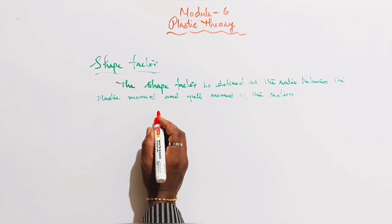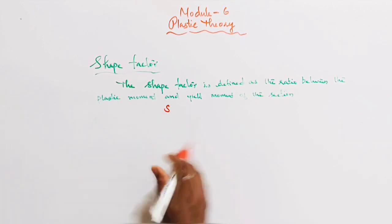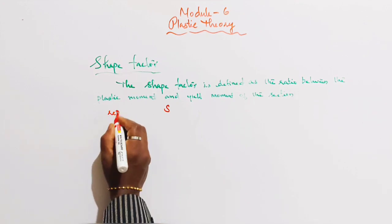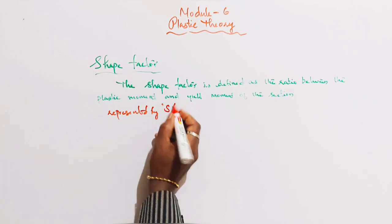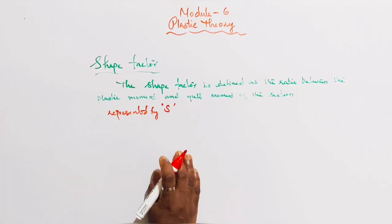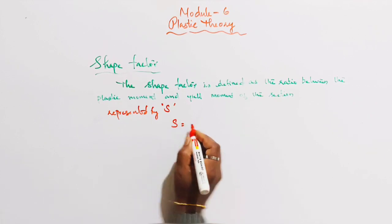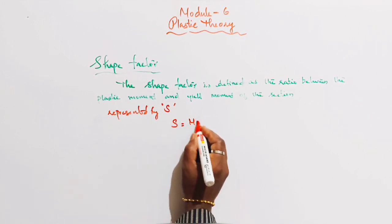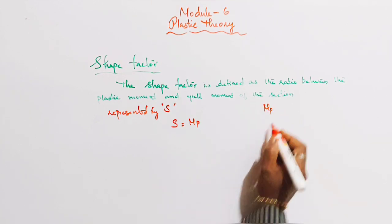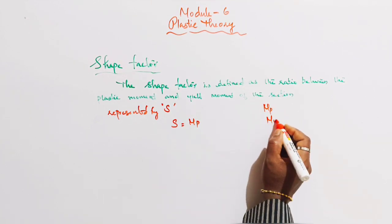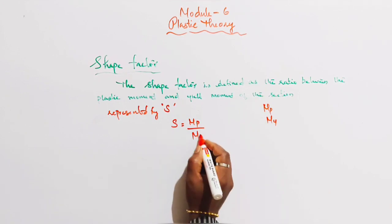Shape factor is denoted by the letter S. Shape factor S is equal to the ratio between plastic moment MP and the yield moment MY. So, S is equal to MP by MY.